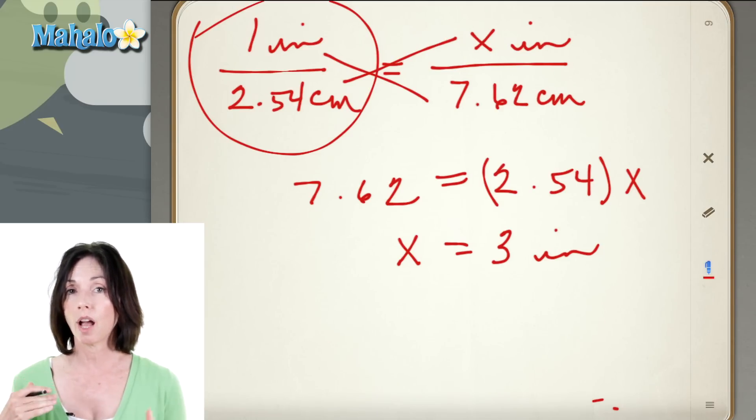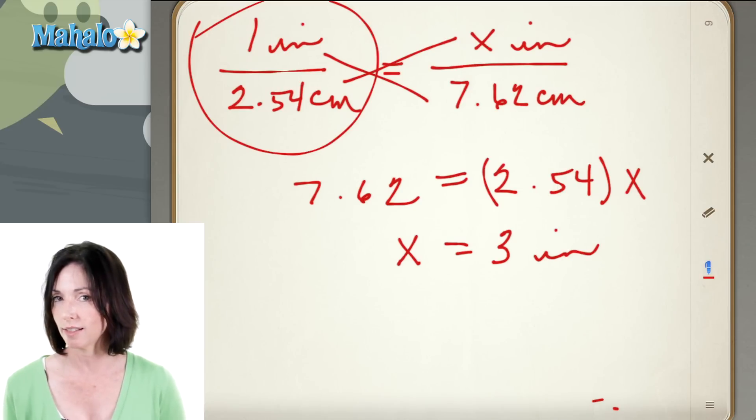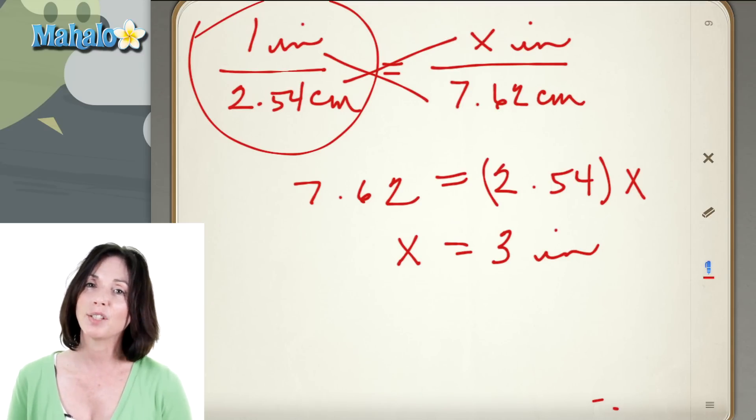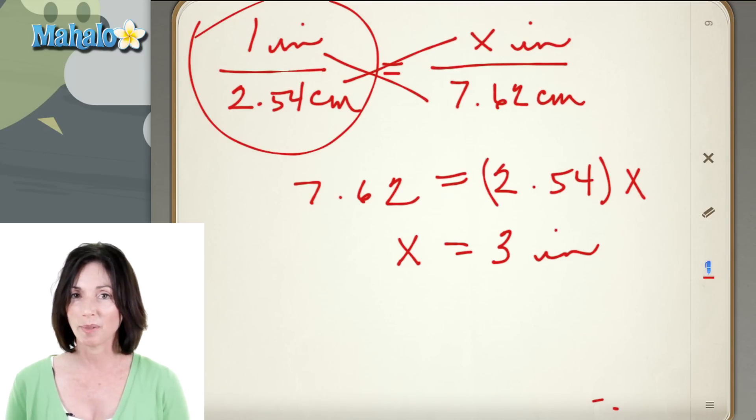If you put inches on the top on one side you have to put inches on the top on the other. And if the centimeters are on the bottom you got to keep the centimeters on the bottom. Then you just cross multiply and solve for the thing that you're missing. And that's how you do conversions from inches to centimeters.